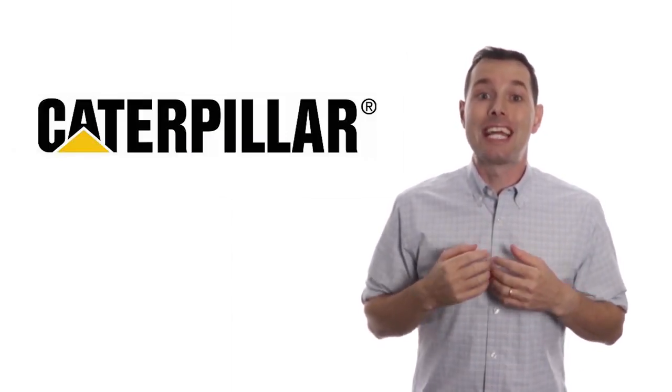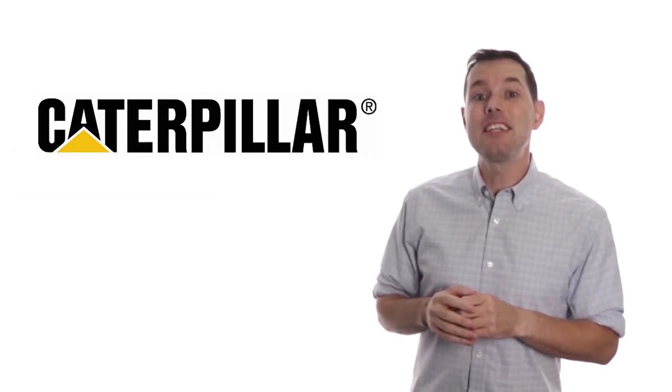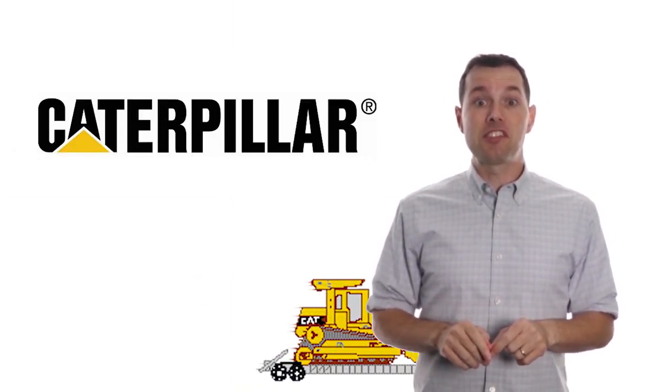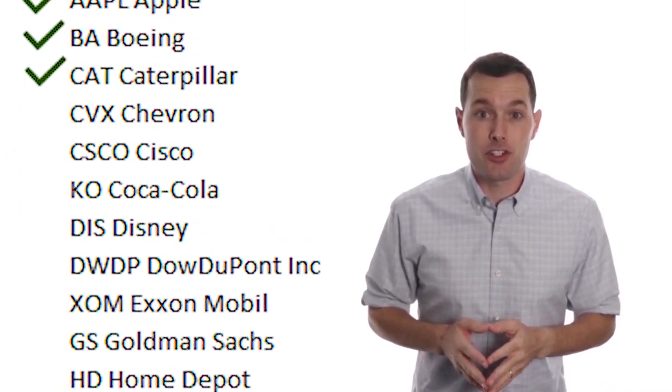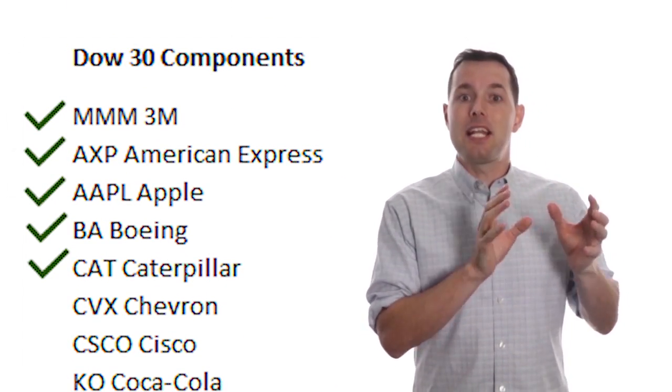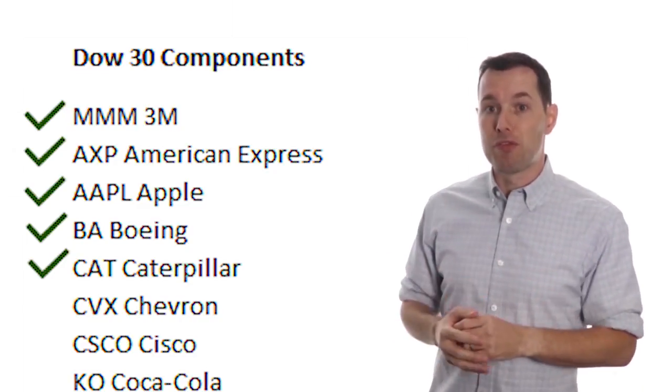Hey YouTube I'm Jimmy. In this video I'm going to walk through my analysis of Caterpillar, ticker symbol CAT. This continues our series where we're analyzing all 30 stocks in the Dow Jones Industrial Average with the ultimate goal of taking that analysis and trying to build a great portfolio.